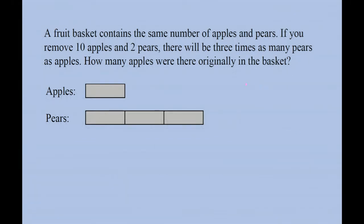I'm going to work backwards. Let me explain what I mean by that. Let's say you've already removed 10 apples and 2 pears — they're gone. According to the question, there will be three times as many pears as apples. Three rectangles represent the number of pears. I don't know what each rectangle represents yet — I'm going to find out. If three rectangles represent the pears left after two pears are removed, then one rectangle represents the apples left after 10 apples are removed. That's the basis of my solution.